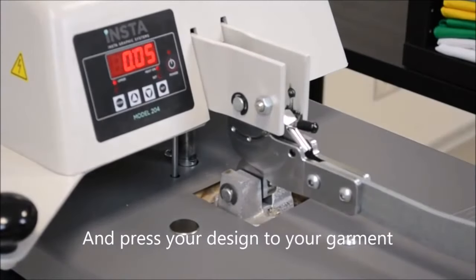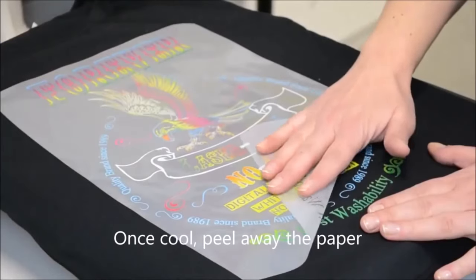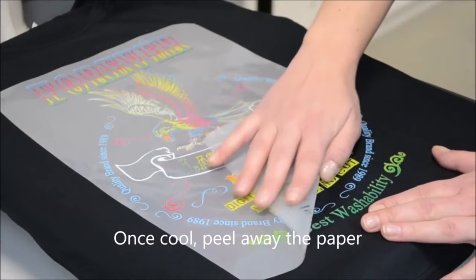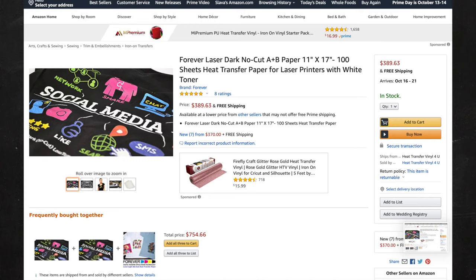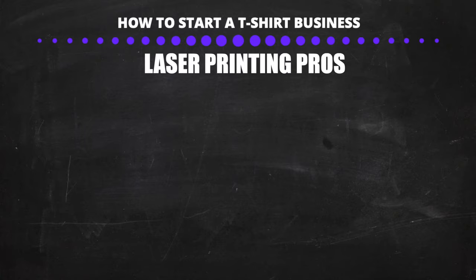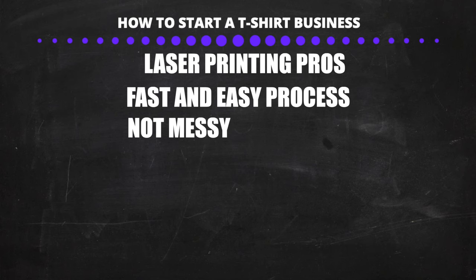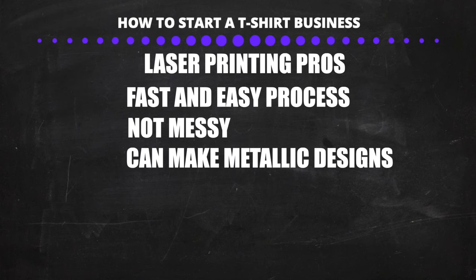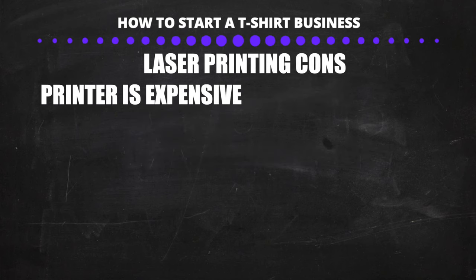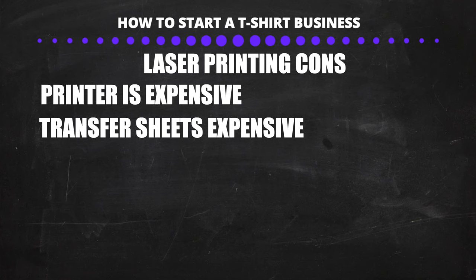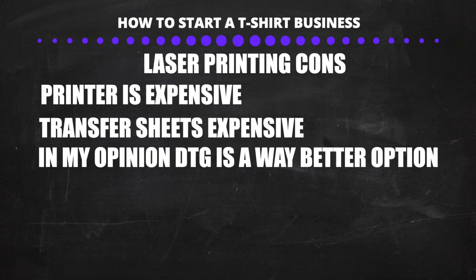You can also make metallic foil shirts this way — simply print on one sheet, put the foil over it, press and peel the foil. The best transfer sheets in my opinion are Forever transfer sheets — they're the highest quality. The pros of laser printing are that it's fast and easy, it's not messy, and you can make all kinds of unique designs such as gold metallic foils. The cons are it's expensive, the good quality transfer papers are not cheap, and honestly I prefer the results of DTG printing much more than laser.